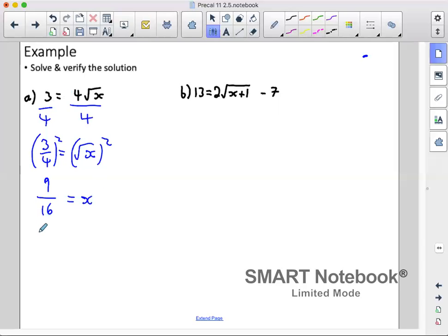Now to verify we just take our original equation and substitute in our 9 over 16. We have 3 is equal to 4 root of 9 over 16. So we have 3 is equal to 4 times square root of 9 is 3, square root of 16 is 4. We just cancel it so we have 3 equals 3. So we have verified it.